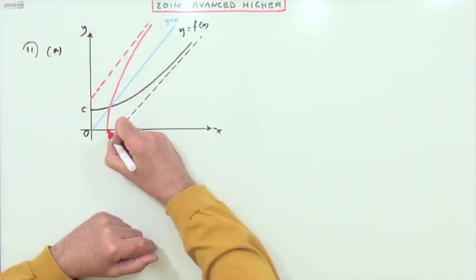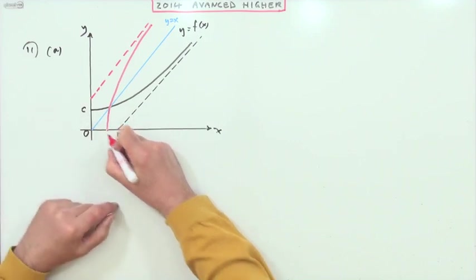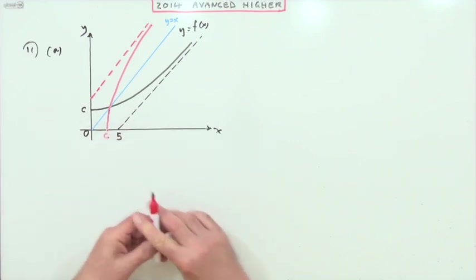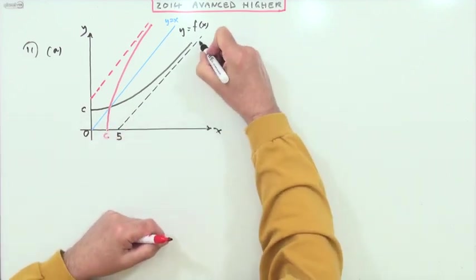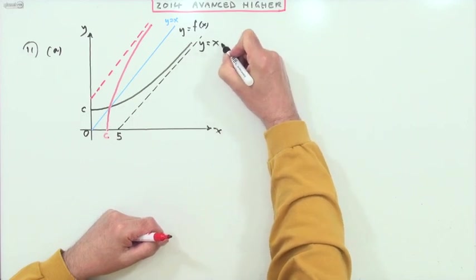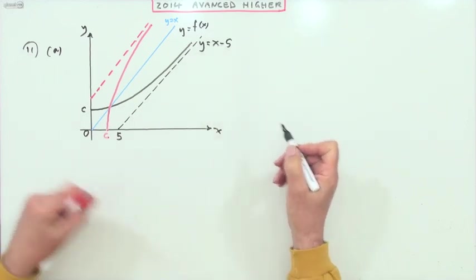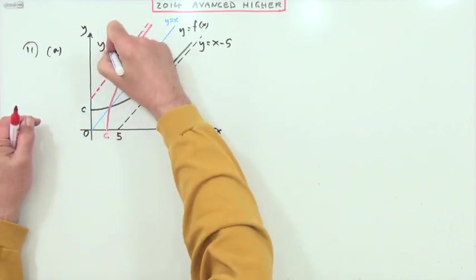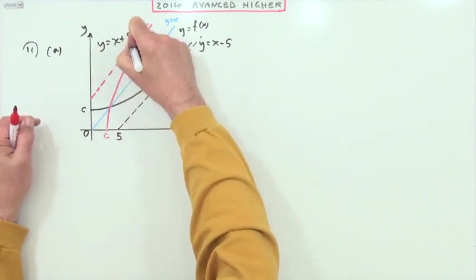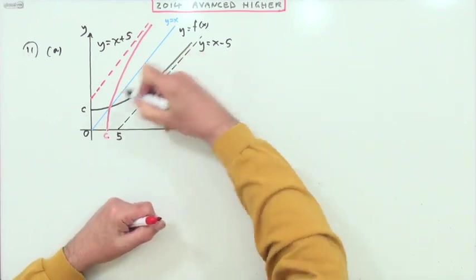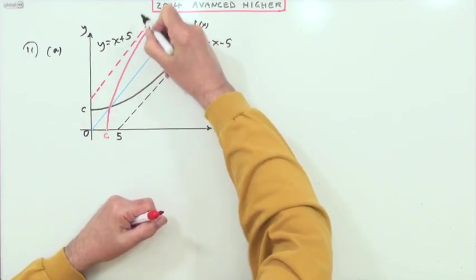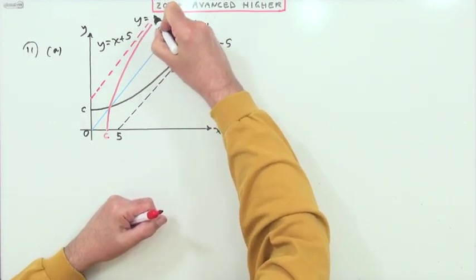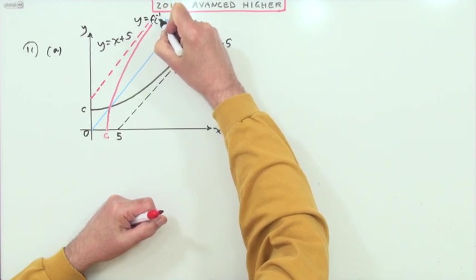So there's the inverse function. I can put in some features of it. If that cuts at c, that will cut at c. If the equation of this asymptote was y equals x minus 5, the equation of this one will be y equals x plus 5. That is the graph of y equals the inverse of x.